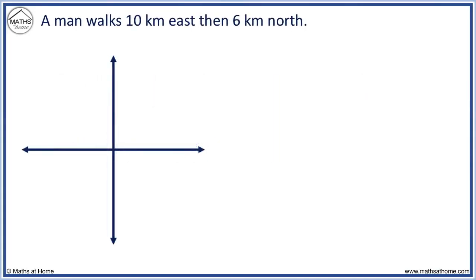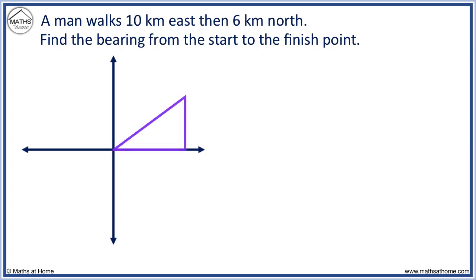A man walks 10 kilometers east then 6 kilometers north. Find the bearing from the start to the finish point. We draw a triangle to represent the journey, traveling 10 kilometers east then 6 kilometers north.